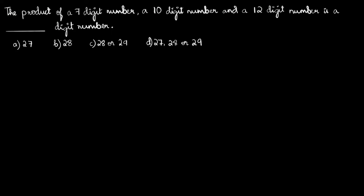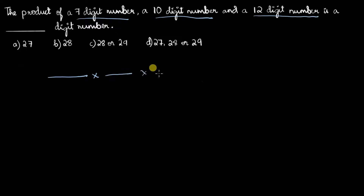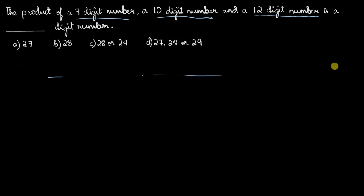In this question we have been given a 7-digit number, a 10-digit number, and a 12-digit number, and we need to find how many digits their product has. Looking at the options, some say there is just one possible outcome — 27 digits or 28 digits — while two other options say it can be 28 or 29 digits, or 27, 28, or 29 digits.